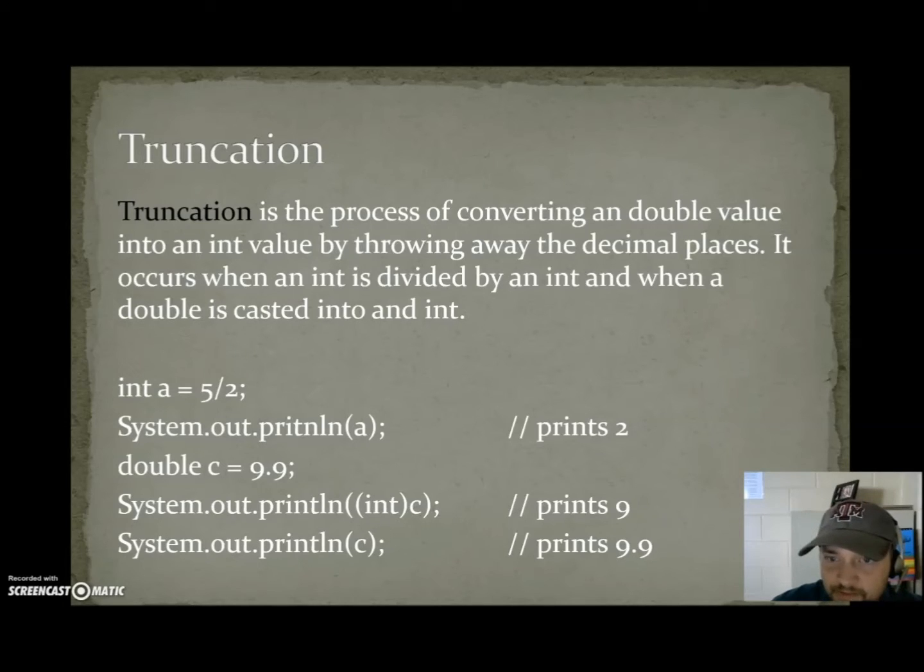Truncation. Truncation is the process of converting a double value into an int value by throwing away its decimal places. It occurs when an int is divided by an int and when a double is casted into an int. We'll be going over casting later, so you might want to flip back to this example after we go over casting. The first part can be covered relatively easily though. Int a equals 5 divided by 2, that's an int divided by an int: 2.5, which really boils down to 2 point I don't care. It doesn't matter what's beyond the decimal point. So int a equals 5 divided by 2, giving you a result of 2.